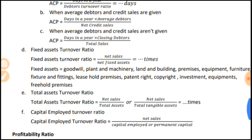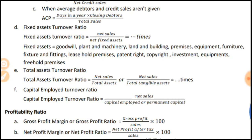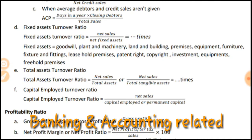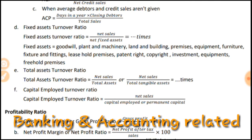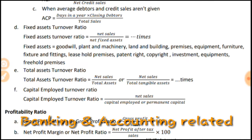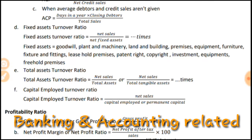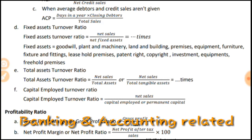Fixed assets turnover ratio equals net sales divided by fixed assets. Fixed assets include: goodwill, plant and machinery, land and building, premises, equipment, furniture, fixtures and fittings, leasehold premises, patent rights, copyright, investment, and pre-held premises.